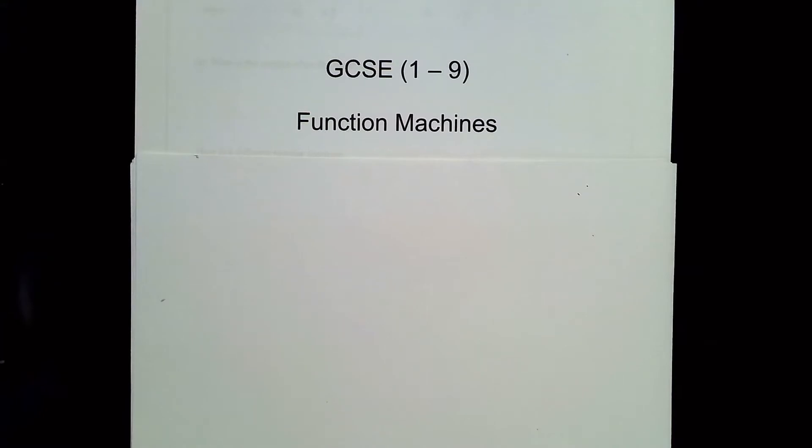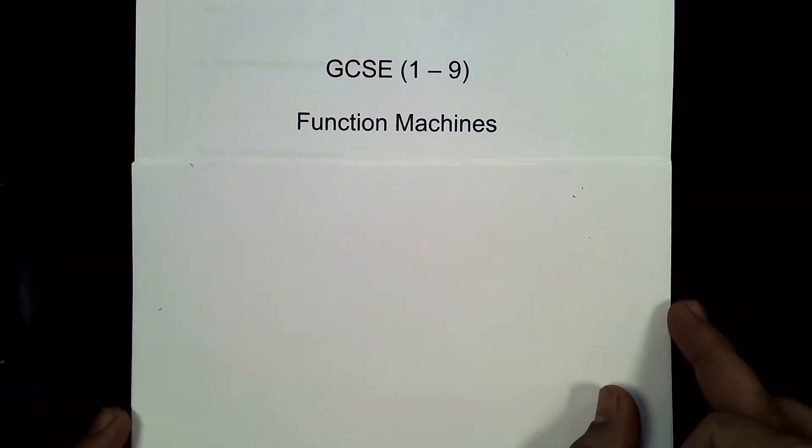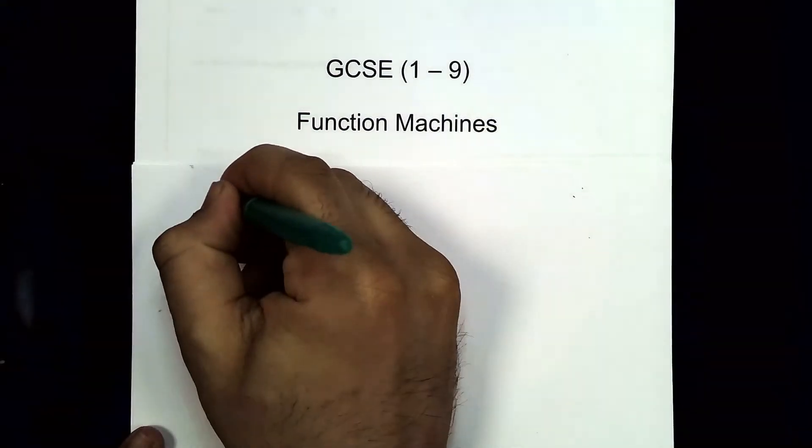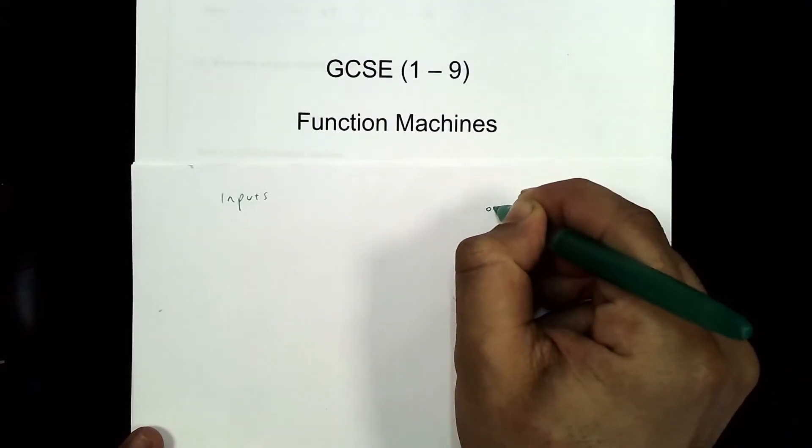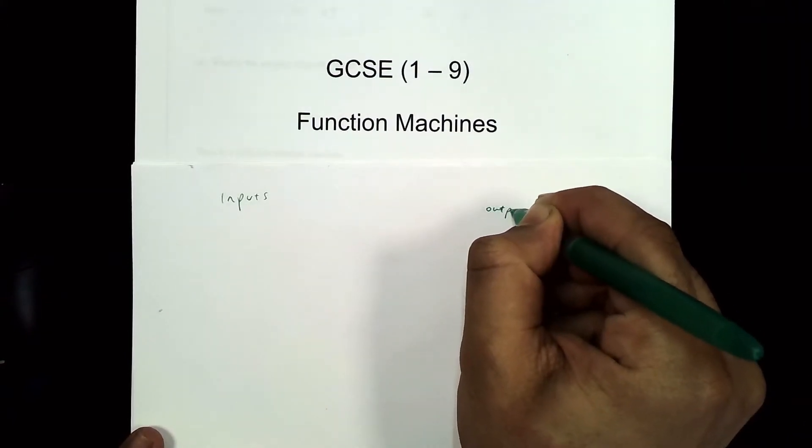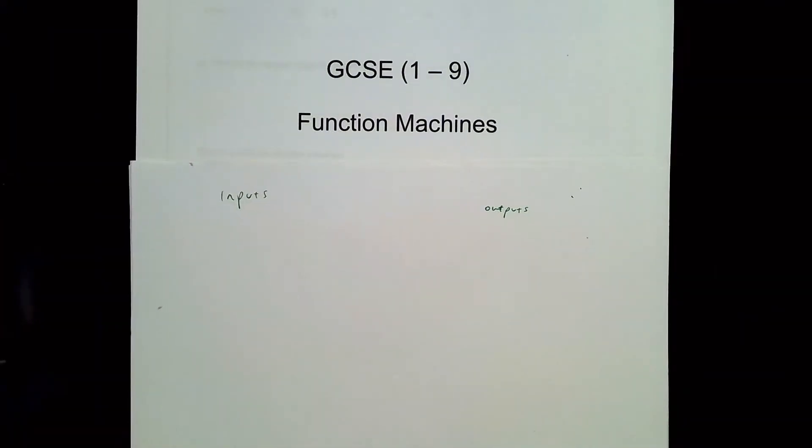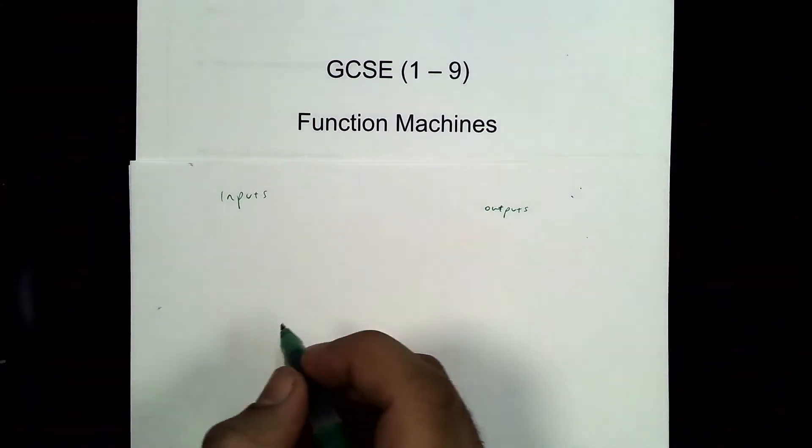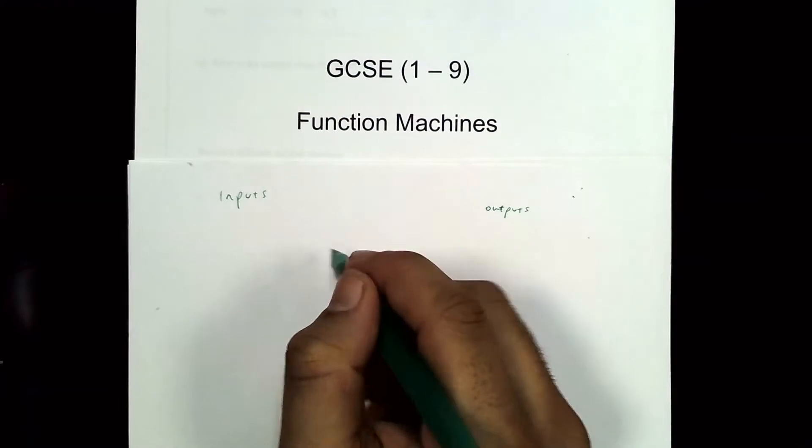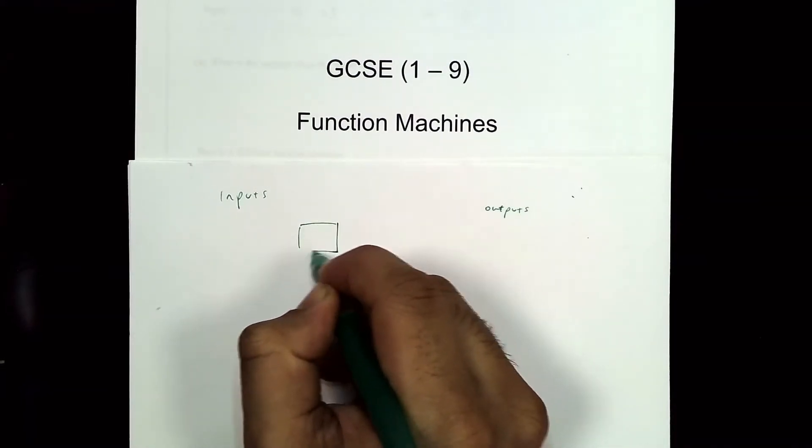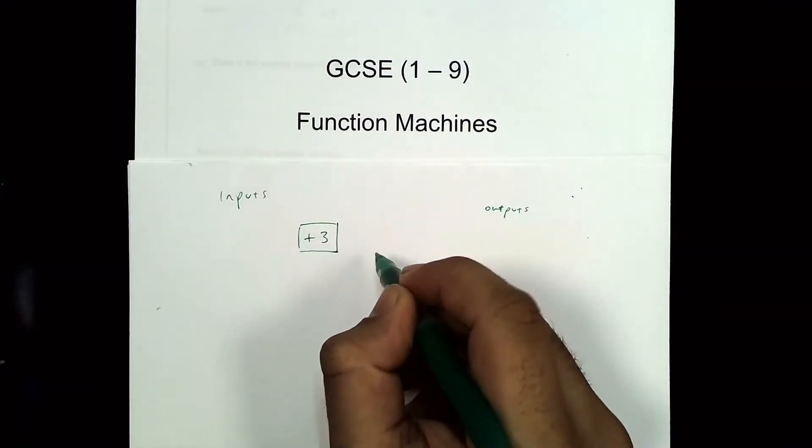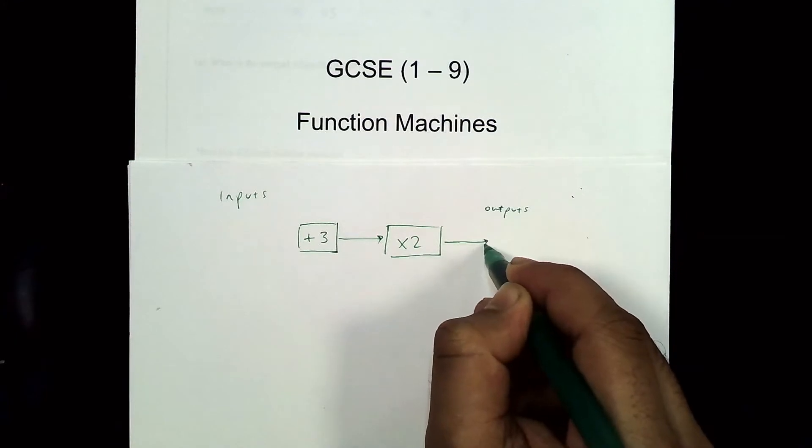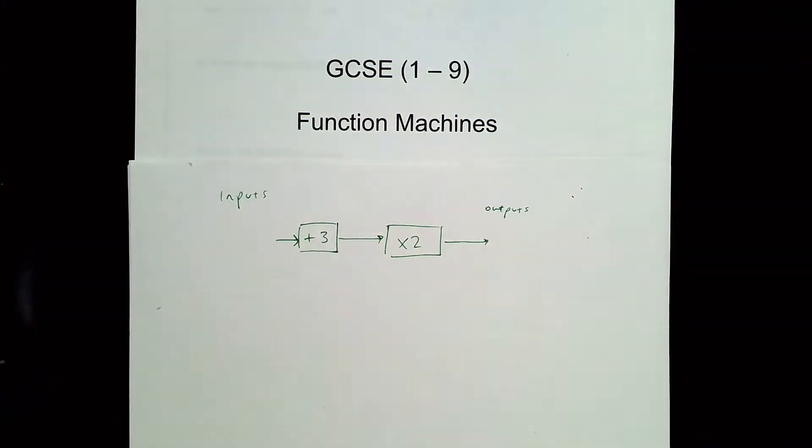So year seven, eight, and nine, this is something that will help you with your current remote learning. Function machines really are about inputs and outputs. If you think about a machine, the whole purpose is that it takes something, it does something to it, and then you get an output. For example, I have a machine here that adds three and then times by two, multiplies by two, and then gives me an output.